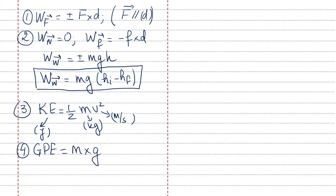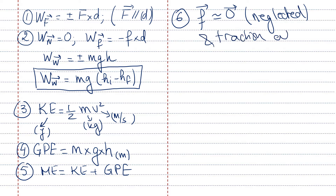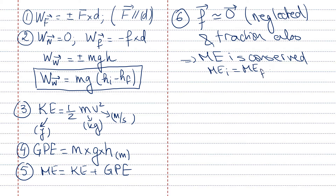Fourth, we have gravitational potential energy, which is mass times gravity times height, where height should be in meters. Fifth, mechanical energy is the sum of kinetic and gravitational potential energy. As for the total energy, that is an optional idea. Sixth, when friction is neglected and traction as well, then mechanical energy is conserved. To express conservation, simply say mechanical energy initial equals mechanical energy final, and choose the initial and final points wisely.